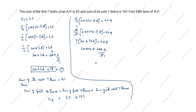So our second equation is: 2a + 13d = 32.